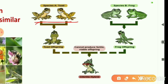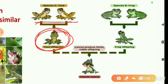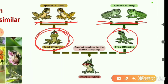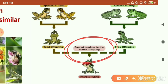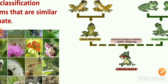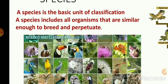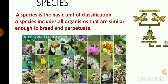Each family has many Genera, and under each genus there are many Species. Species is the smallest and basic unit of classification — it includes organisms similar enough to breed and produce fertile offspring. For example, different varieties of toads can interbreed to produce fertile offspring, and different varieties of frogs can as well, but a toad and a frog cannot produce fertile offspring together. This shows that toads and frogs belong to different species. There are millions of species on earth, many of which have not yet been discovered.